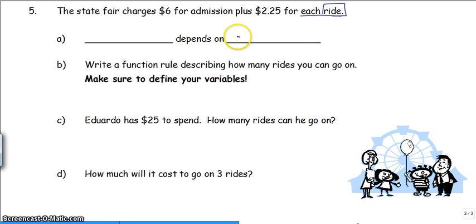The ride is going to be our independent variable. Our cost will depend on the number of rides. C is our cost. Number of rides, I will use R. Defining my variables, R is the number of rides. Our function rule: we have $6 for admission. That does not change. I can ride zero rides or a million rides. My $6 admission fee does not go up or down.